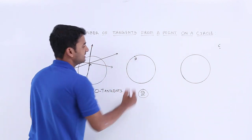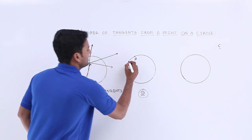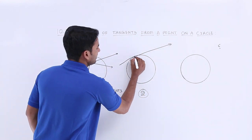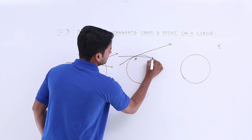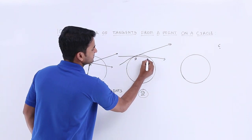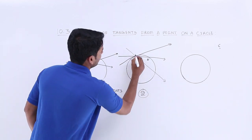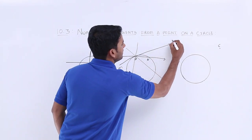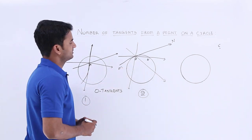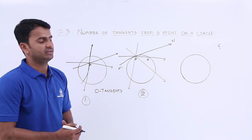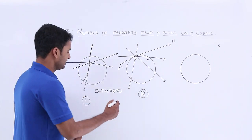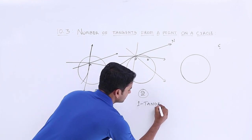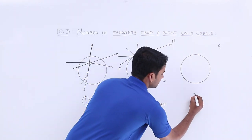Coming to Case 2: we have a point B that is on the circle. We can draw a line like this that has only one point of contact. Every other line we draw has two points of contact, except line MN. So we get only one tangent here; all remaining lines are secants of the circle.